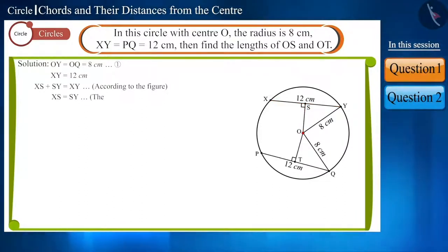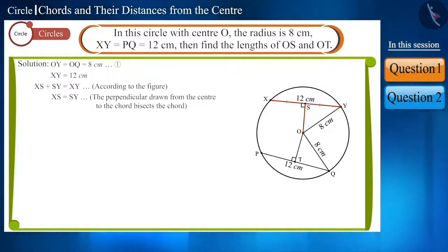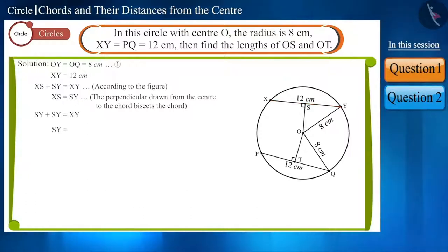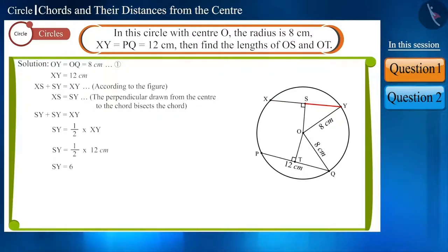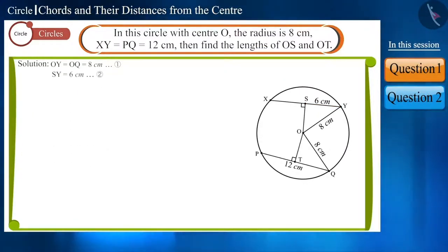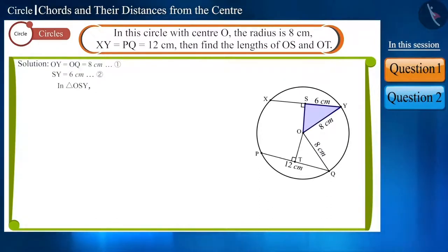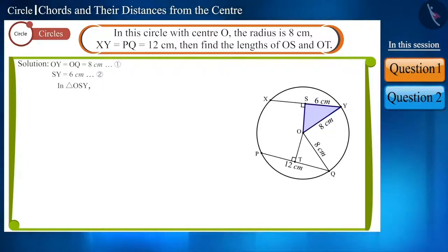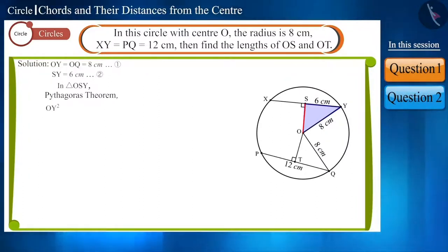We know that the perpendicular drawn from the center of the circle to the chord bisects the chord. So XS and SY will be equal. This means SY will be equal to half of XY, from which we obtain SY as 6 cm. Looking at triangle OSY, this is a right-angled triangle. We know the length of side SY and the hypotenuse OY. Using the Pythagoras theorem, we can easily find the length of OS.